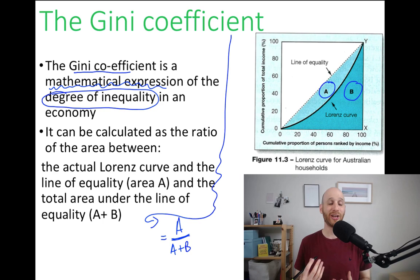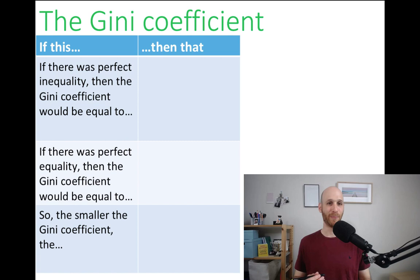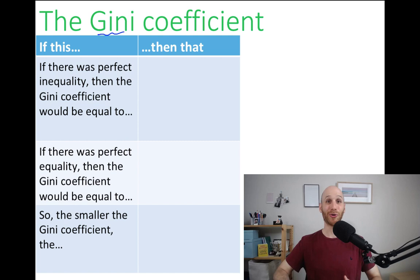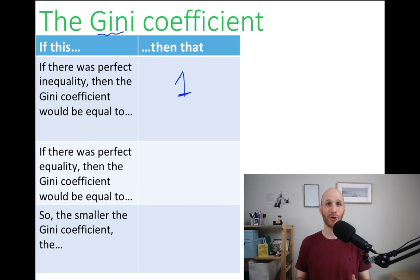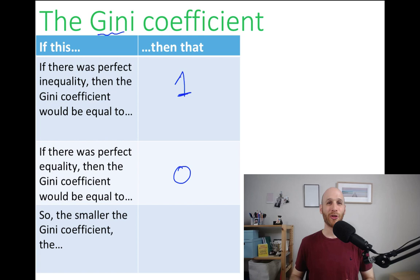Looking at the Gini coefficient: if there was perfect inequality — one person in society earned all of the income or owned all of the wealth — then the Gini coefficient would be equal to one. And if there was perfect equality in society, where everyone had an equal share of income or wealth, then the Gini coefficient would be equal to zero — there's a smaller distance between the Lorenz curve and that line of perfect equality. In general, the smaller the Gini coefficient, the more equal income or wealth distribution is in an economy.